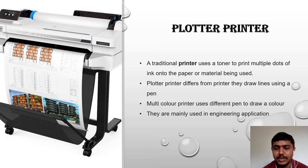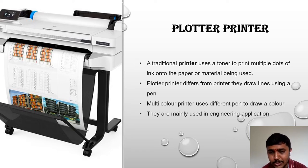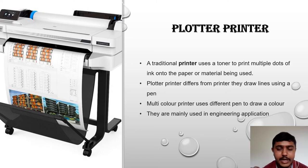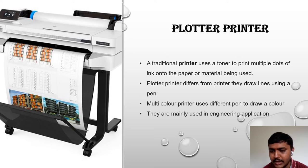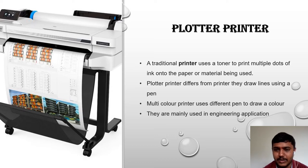A plotter printer uses a pen or tone to print multiple dots of ink onto paper or material. In a plotter, the drawing instrument is called a pen, and different images are printed using those pens. Multiple colors are used in the plotter printer using different kinds of pens, which help draw the given shape. This is mainly used in engineering applications — design plans are drawn with the help of plotter printers.